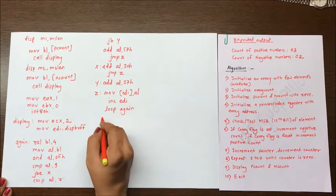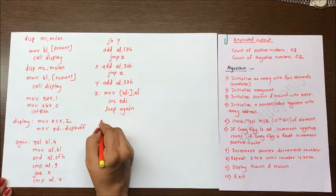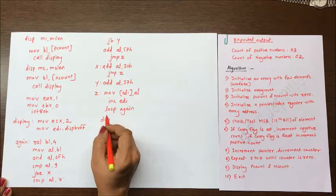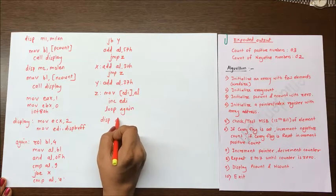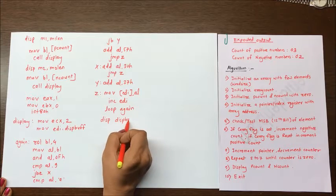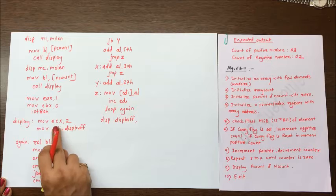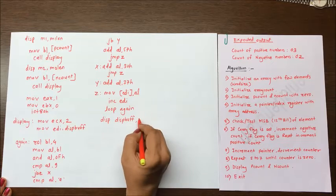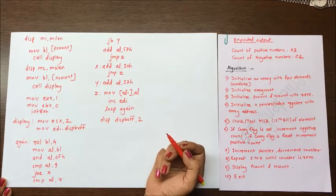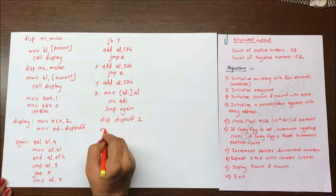So this is your display procedure. At the end, your buffer is ready. So display that buffer using same macro. That is disp macro, disbuff, comma how many elements you want to display? Two elements. So whatever is ECX, you have to write it here. That is disbuff comma 2. And at the end, return.